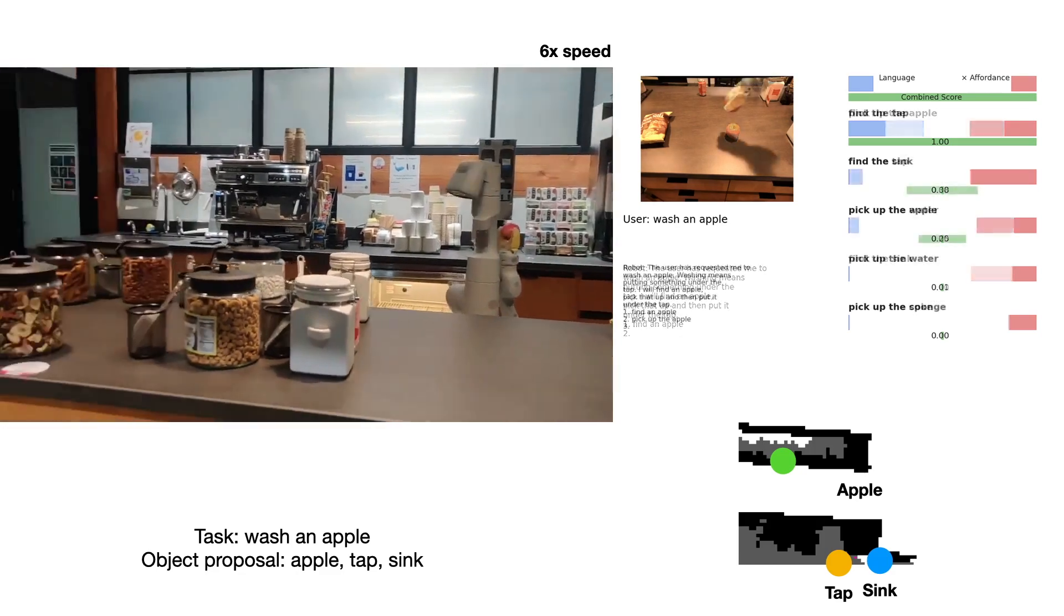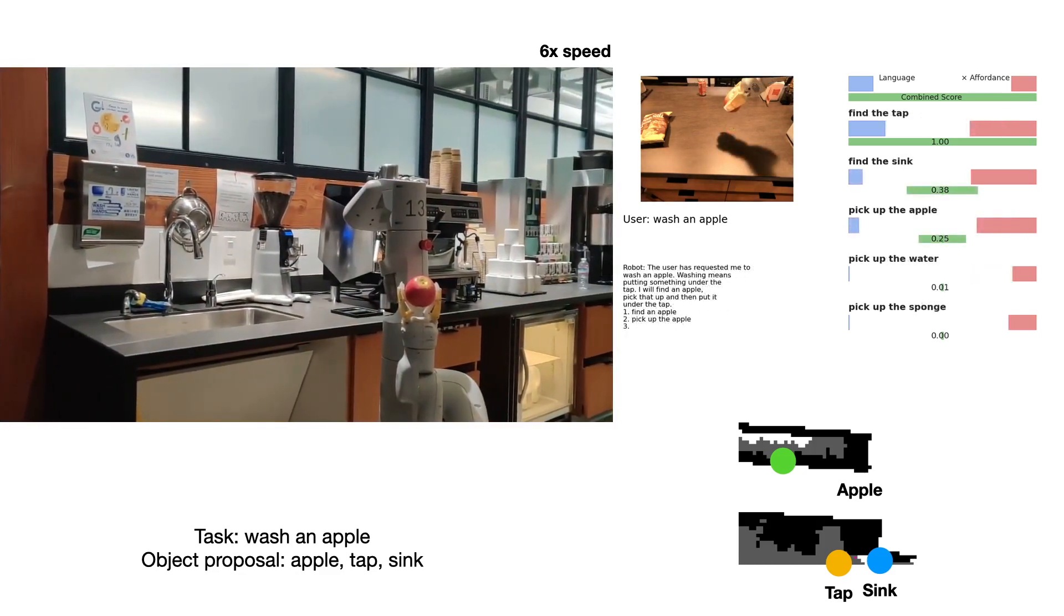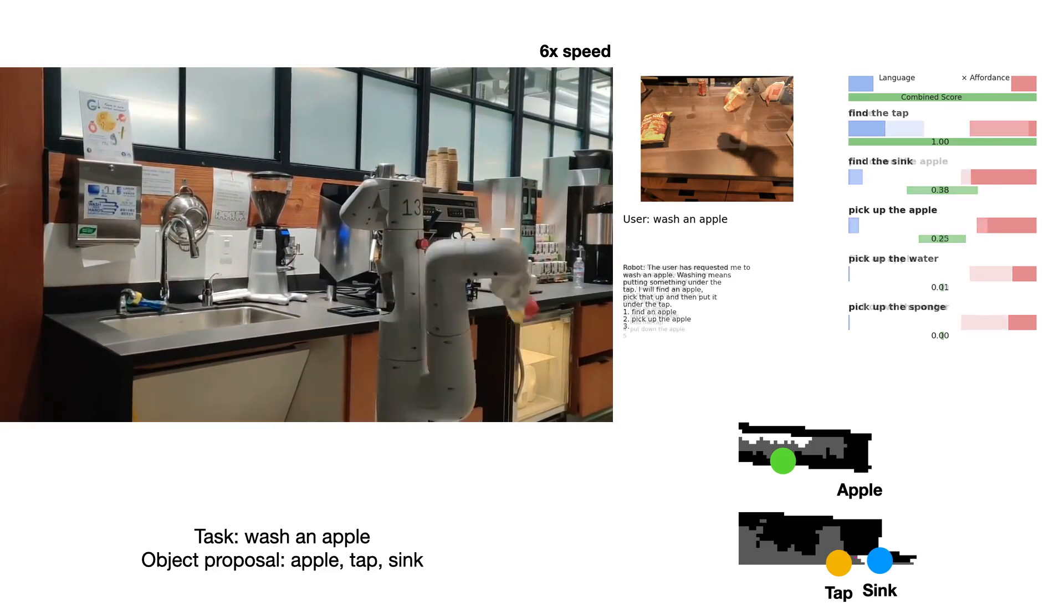If we are unconstrained by available manipulation policies, we can lift the constraint on large language models, and then it will output steps like turn on the tap as the next action.